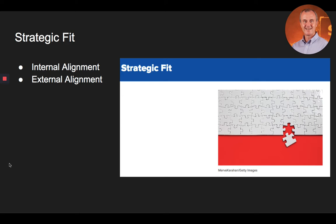A firm cannot achieve alignment if it tries to do everything or if it undertakes incompatible activities. Harvard Business School professor Michael Porter once observed that, quote, The essence of strategy is choosing what not to do.